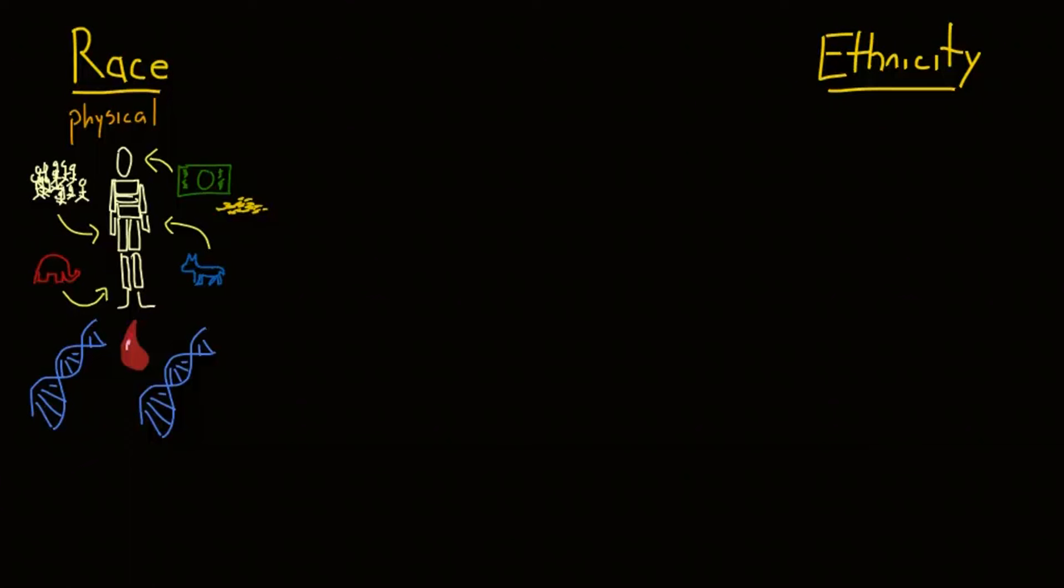And yet, it is incredibly important on a social level. Every culture places a different importance on specific physical characteristics. For example, in the US, race is identified by broad categories of skin color, but hair color is considered unimportant.